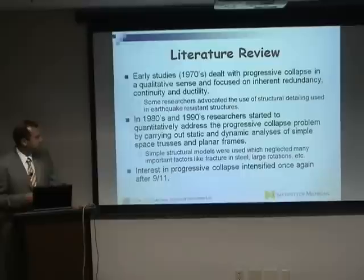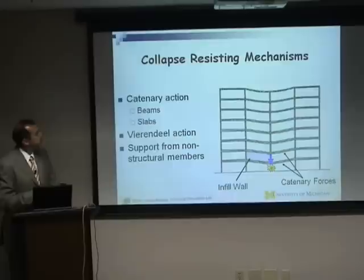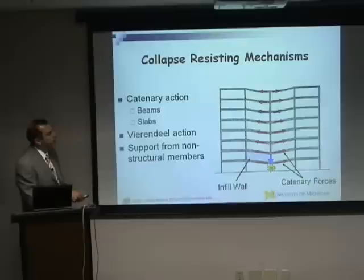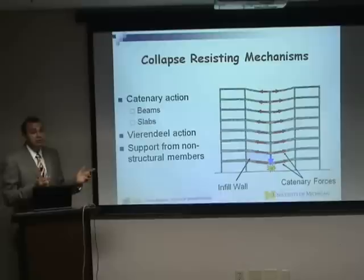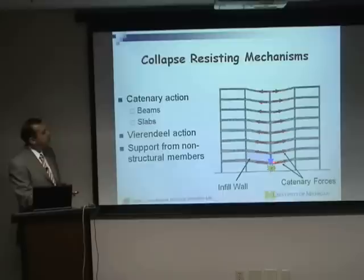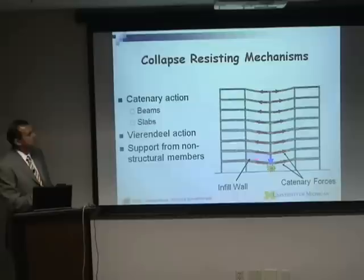What are the mechanisms that resist collapse? Three can be clearly defined. First, catenary action — once a column is lost and the building deflects, tensile forces develop in the beams, like a catenary chain, supporting the member and preventing collapse. Second, virendial action — the entire surrounding frame supports loads. Third, non-structural elements providing struts. But the last line of defense is catenary action — we consider this of primary importance in collapse resistance.